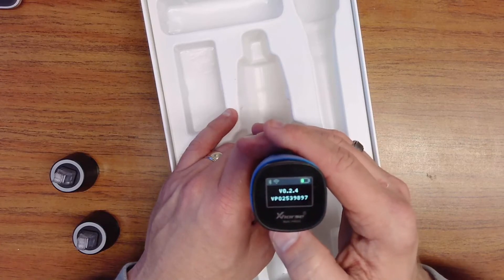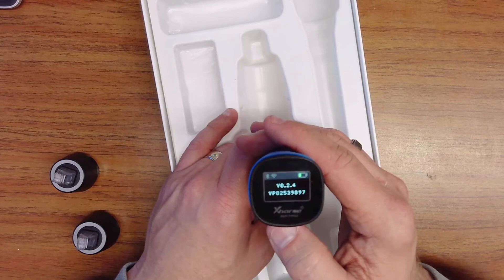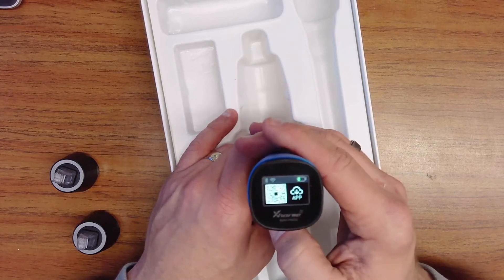I'm going to hit menu again. I can see, looks like the serial number and the firmware version of this tool. And I'm going to hit menu, and I'm back to the app.